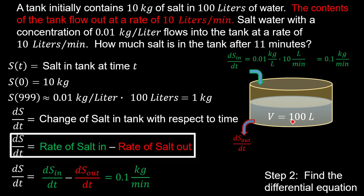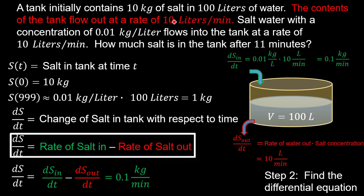Assuming the salt is equally mixed in the water, the rate of salt leaving equals the flow rate of water out times the salt concentration inside the tank. So dS_out/dT equals 10 L/min multiplied by S divided by 100 liters — since S of T is the salt in the tank and S/100 is the concentration. The liters cancel, giving kilograms per minute.